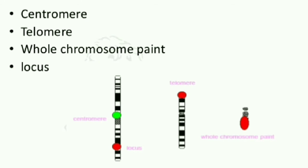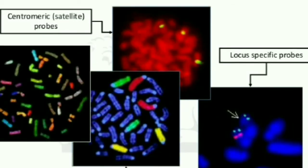In whole chromosome paint, the whole chromosome is being painted. So these are some of the chromosome paintings: centromere painting, telomere painting, locus painting, and whole chromosome painting.